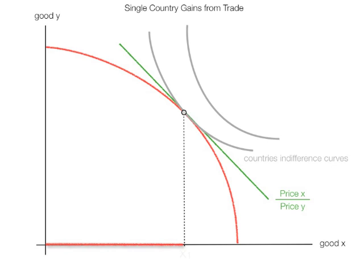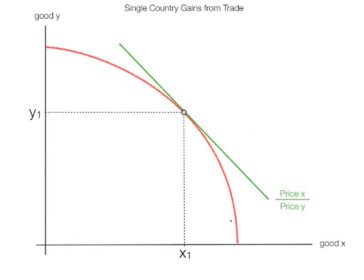This is very similar to how a consumer consumes limited by their budget line. At this point, there will be X1 produced and Y1 produced. Let me get rid of some of this so you can see a little bit better what I'm doing here. Again, this is the PPF or the production possibility frontier of the red.